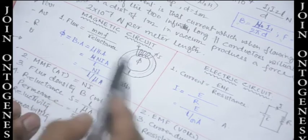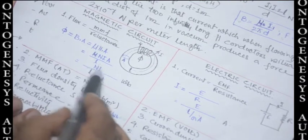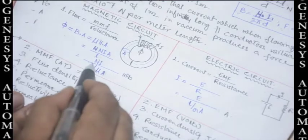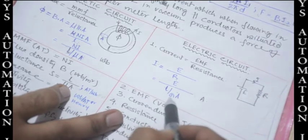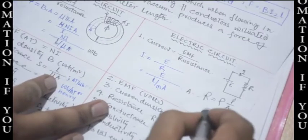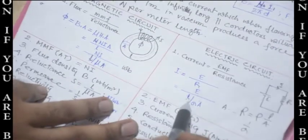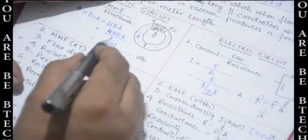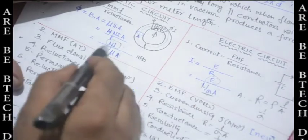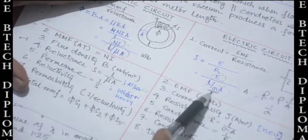Phi = μ · H · A and H = NI / L, so phi = μ · N · I · A / L. Similarly, I = E / R, and R = ρL / A = L / (σA). So E / (L / σA) resembles NI / (L / μA). MMF corresponds to EMF, reluctance corresponds to resistance, and the expressions L/(μA) and L/(σA) are analogous.